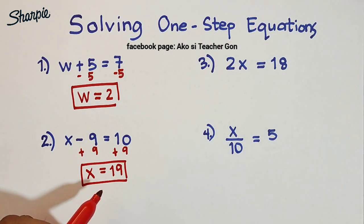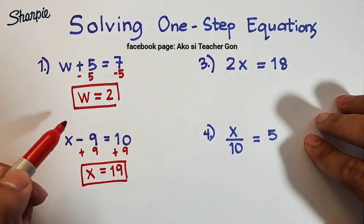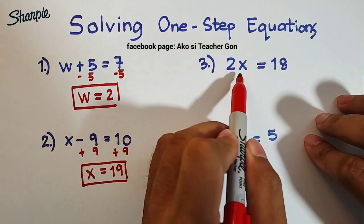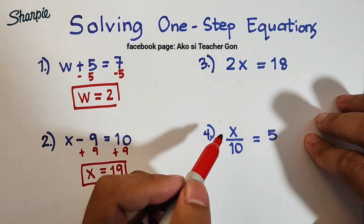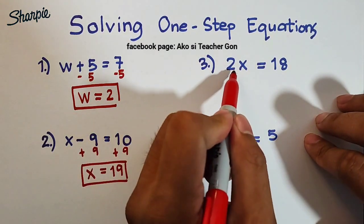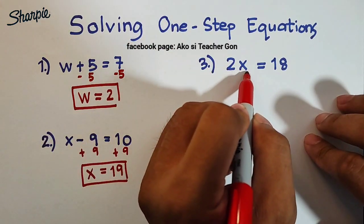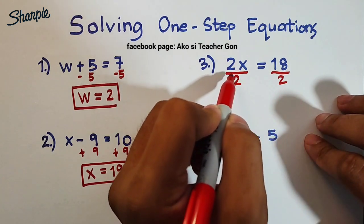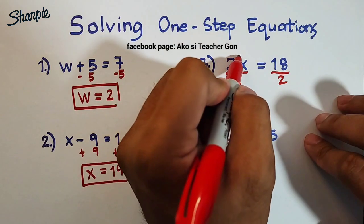Now let's proceed with item number three. In number three, it has a different format compared to item number one and item number two. What we have here is 2x = 18. So how are we going to eliminate 2 to make it x? What we need to do is divide both sides of the equation by 2.